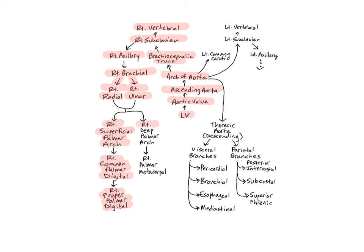The right deep palmar arch is formed by the deep branches of the radial and ulnar arteries, and supplies the muscles, bones, and joints of the palm and fingers. It curves across the palm near the bases of the metacarpals and branches into the palmar metacarpal arteries, which form anastomoses with the common palmar digital arteries from the superficial palmar arch.